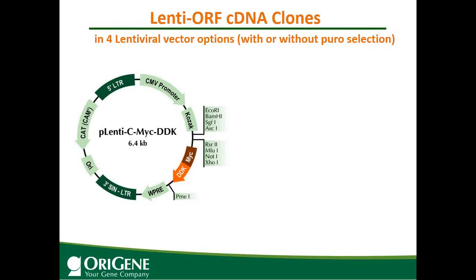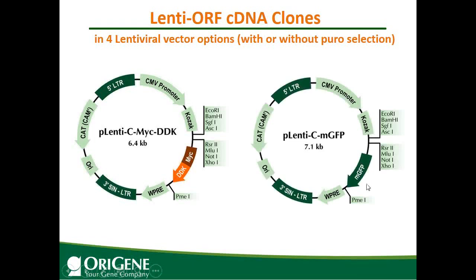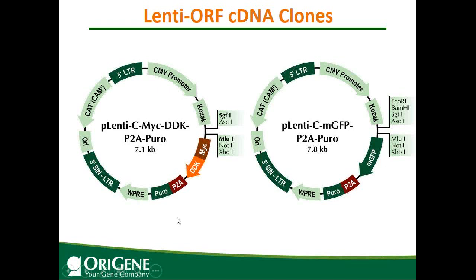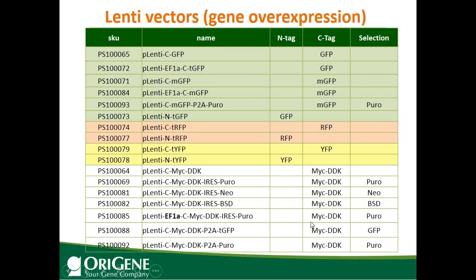OriGene also offers ETA-DDK resins. Another vector is the C-terminal GFP fusion vector, where the protein will be in frame with GFP. You can use GFP to monitor transfection or transduction efficiency, and also track the cellular localization of the fusion protein. There are also ORF lentiviral clones with P2A-Puromycin, so you can use puromycin selection after transducing your cells. If you need different tags or selection markers, OriGene offers many lentiviral cloning vectors with different fluorescent proteins or selection markers.